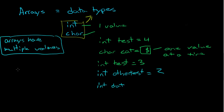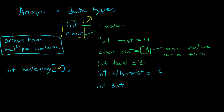The way you declare an array is: if you want it to be a double or an integer — so if we wanted an array of only integers, we would just go int. Let's say this is our test array. The number of values that we want inside, we just put them in these square braces here. Let's say we want ten values — we just go ten. That declares to the computer that we have an array that has ten values.